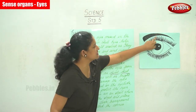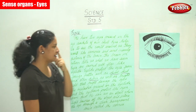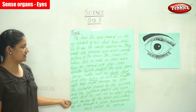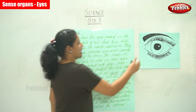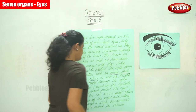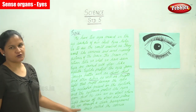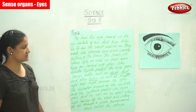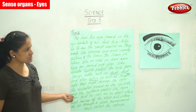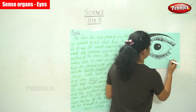The eyelashes are present on the eyelids, and the eyebrows protect the eyes from dust. These are called your eyelashes, and this is your eyebrow.